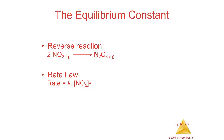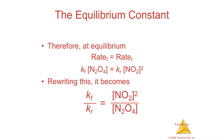The reverse reaction's rate law: if you write it in reverse, you've got two moles of NO2 yielding one mole of N2O4. Its rate law would be Kr — the rate constant in the reverse direction — times the square of the concentration of NO2.